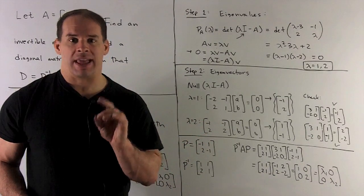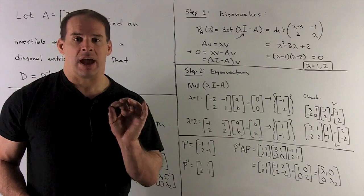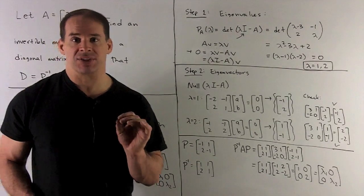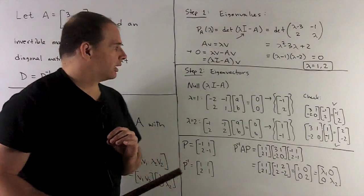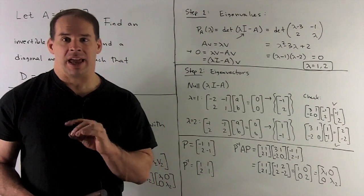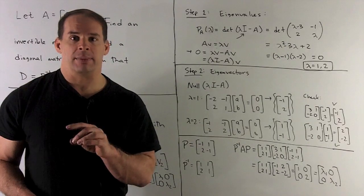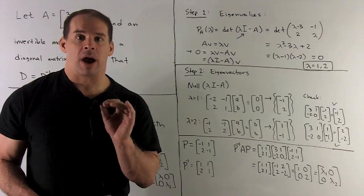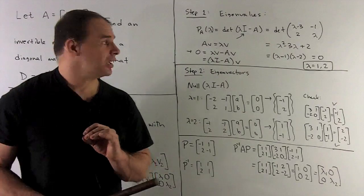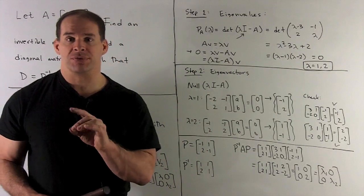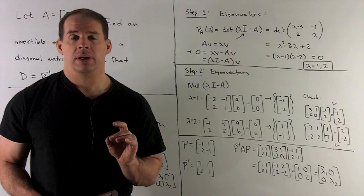Well, if I just put lambda minus A, I'm going to be left with a number minus a matrix, and that doesn't make any sense. On the other hand, lambda times I times V gives me back lambda V. If I take the identity matrix times any vector, I get our vector back. So, the proper factorization is lambda I minus A. That's the difference of two matrices now.